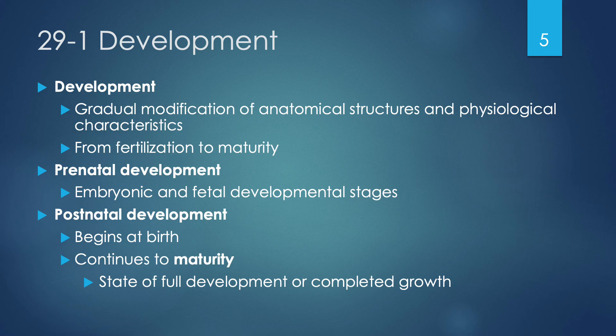In today's lecture we're looking at development both prenatally and postnatally. Natal refers to birth, so everything up to birth is prenatal and everything after is postnatal development. Development in general is characterized as a gradual number of changes in which our anatomical structures and physiology change, starting at fertilization and extending all the way through to full maturity. The prenatal period includes both the embryonic period and the fetal developmental stages — two separate stages, although part of a continuum.